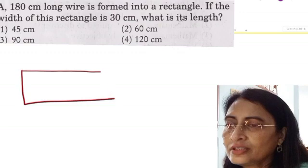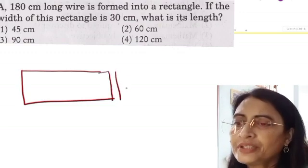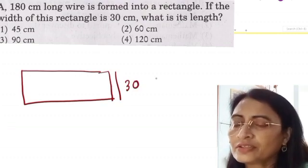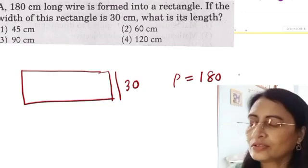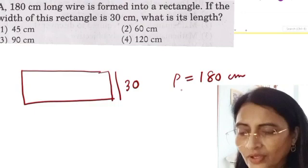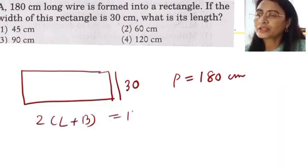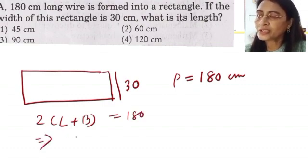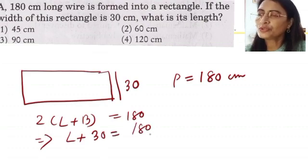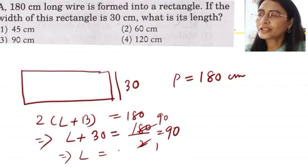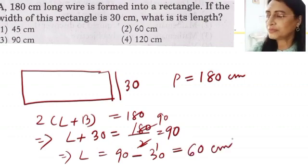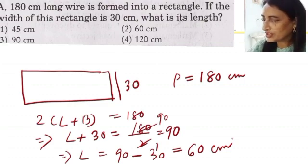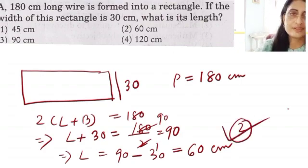Rectangle. And this is given, this is 30 cm. Perimeter is equal to 180 cm. Perimeter means total length of the boundaries. That means length plus breadth. 2 into length plus breadth is equal to 180, so length plus breadth is equal to 180 by 2, this 2 will come here, is equal to 90. So length is 90 minus 30, is 60 cm. Option 2. Yes, so 2 is our right answer.